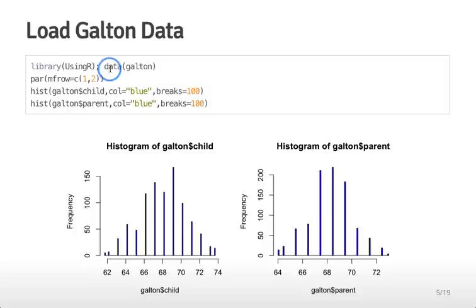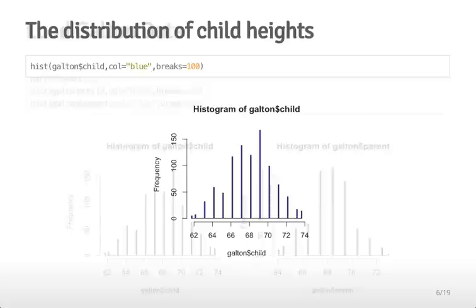You can load the data into R using the UsingR package. If you load that package and type data(Galton) you'll get the dataset. You can look at a histogram of the children's heights and a histogram of the mid-parent's heights, and these distributions look fairly nice, symmetric, and normal.